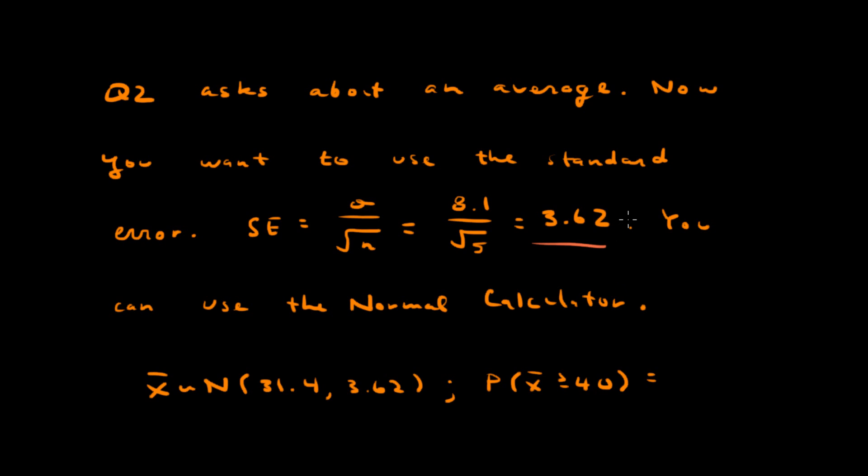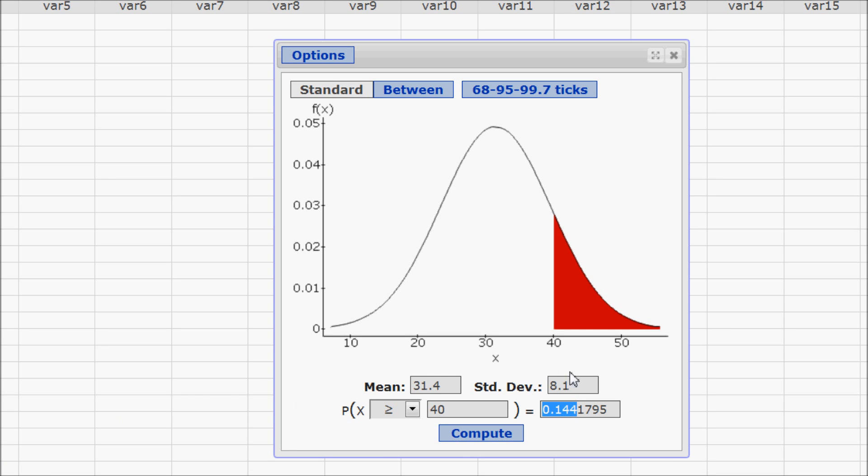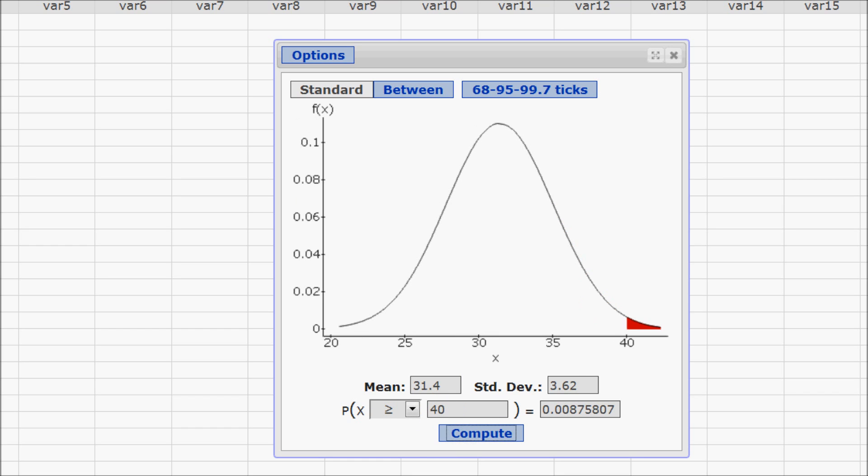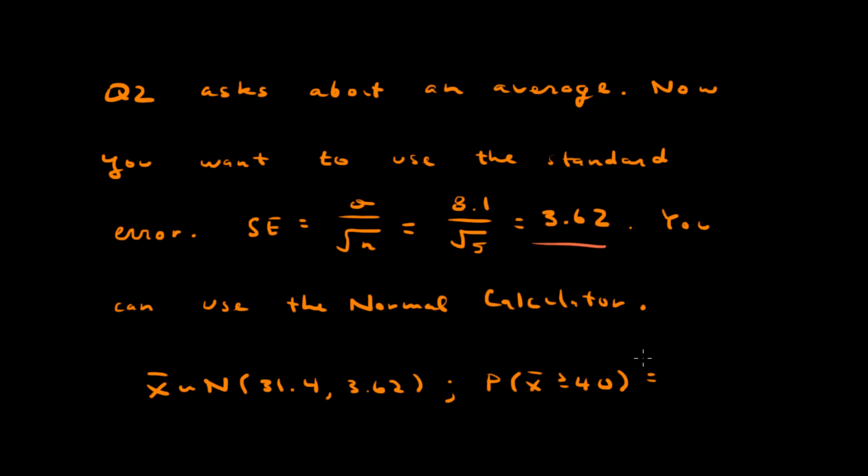And again, you can just use the normal calculator. So we're saying that the sample average is normally distributed with a mean of 31.4 and a standard error of 3.62. So going back to the normal calculator, I'm just going to change this to 3.62. The mean stays the same. We're asking the same question, we want greater than 40. So compute 0.009. So that's 0.009.